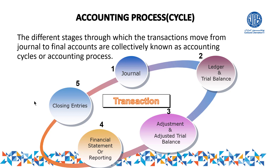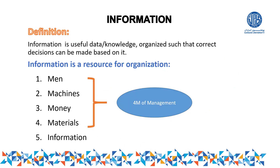The second component is information. What is information? A simple definition: information is useful data or knowledge organized such that correct decisions can be made based on it. If data is organized in a proper way and you can make a proper decision based on it, it can be called information.